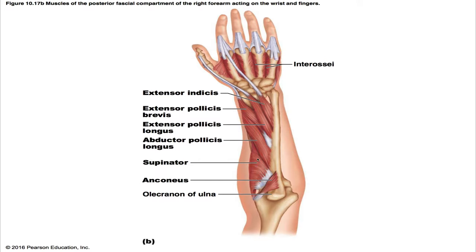The abductor pollicis longus is lateral and parallel to the extensor pollicis longus, just distal to the supinator. Its origin is the posterior surface of the radius and ulna and the interosseous membrane. Its insertion is the base of the first metacarpal and the trapezium. Its action is to abduct and extend the thumb, and it is innervated by the posterior interosseous nerve.